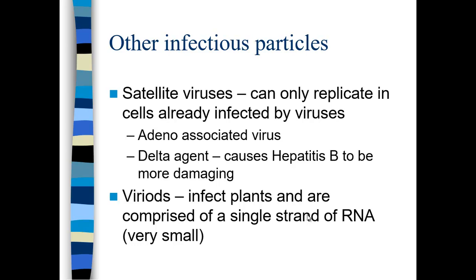Other types of infectious particles include satellite viruses, which replicate in cells already infected with viruses. For example, adeno-associated virus will only infect cells with adenoviruses; the delta agent will only infect cells already invaded by hepatitis B, causing hepatitis B to be more damaging. Then there are viroids — single-stranded RNA particles that are extremely small, have no protein coat, infect plants, and are very difficult to treat.